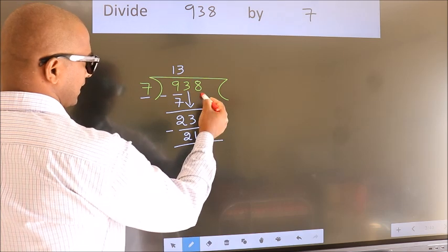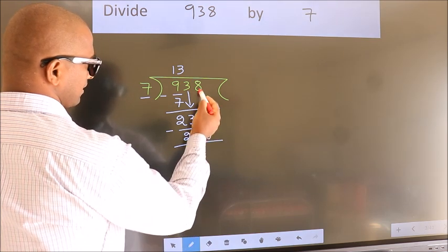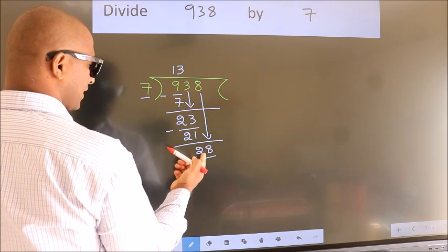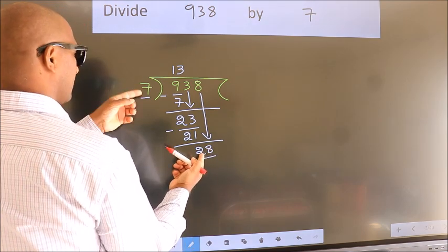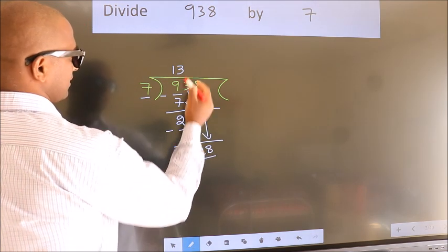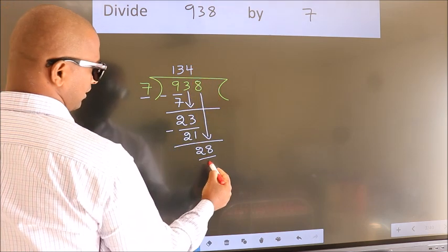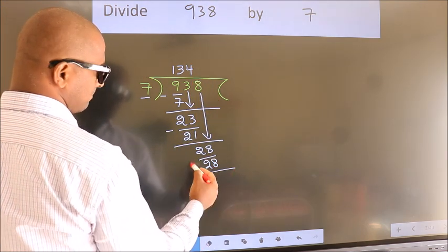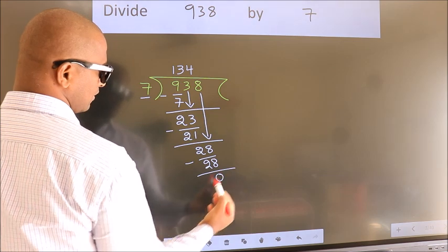After this, bring down the beside number, so 8 down, so 28. When do we get 28 in the 7 table? 7 fours, 28. Now we subtract, we get 0.